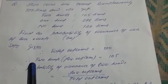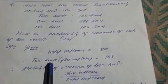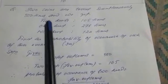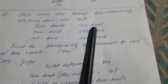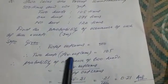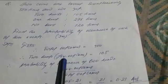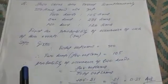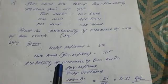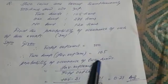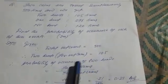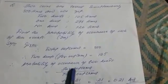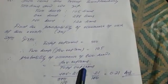In the first case, we have to find the probability of two heads. Two heads occurred 105 times. So the favorable outcome equals 105. We know the formula: probability of occurrence of two heads equals favorable outcome divided by total outcome.